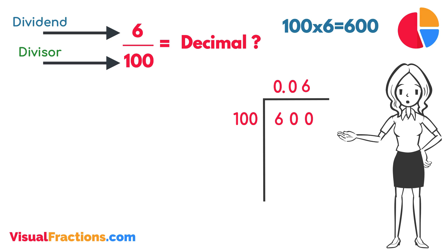Multiplying 6 by 100 gives us 600. When we subtract 600 from 600, we get a remainder of 0.